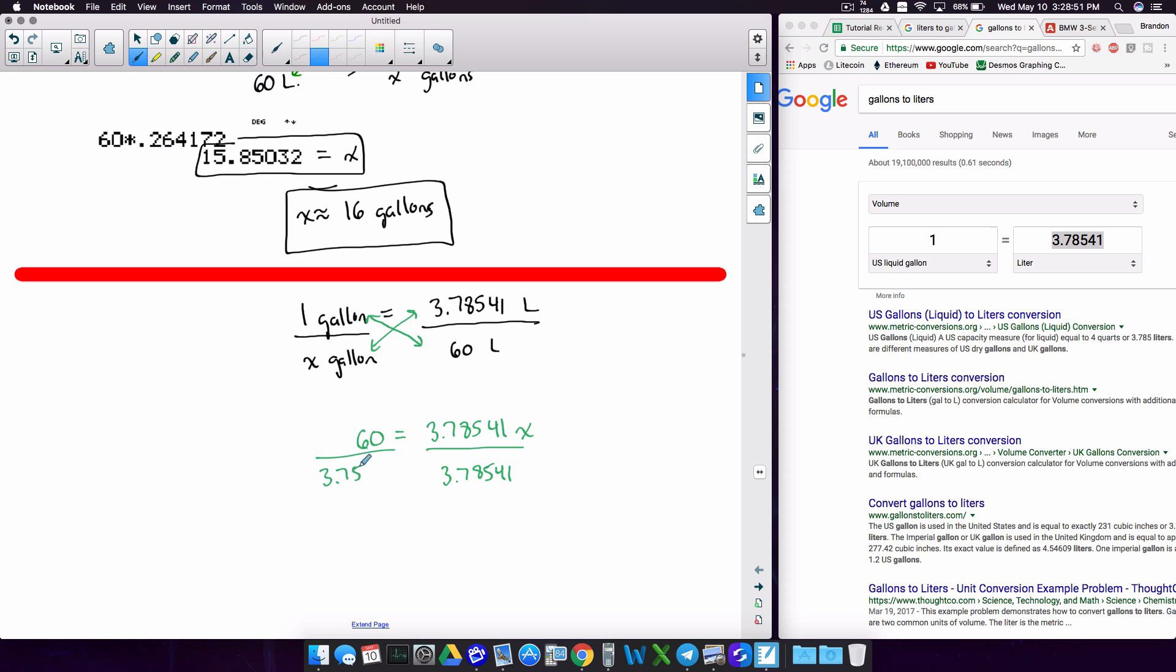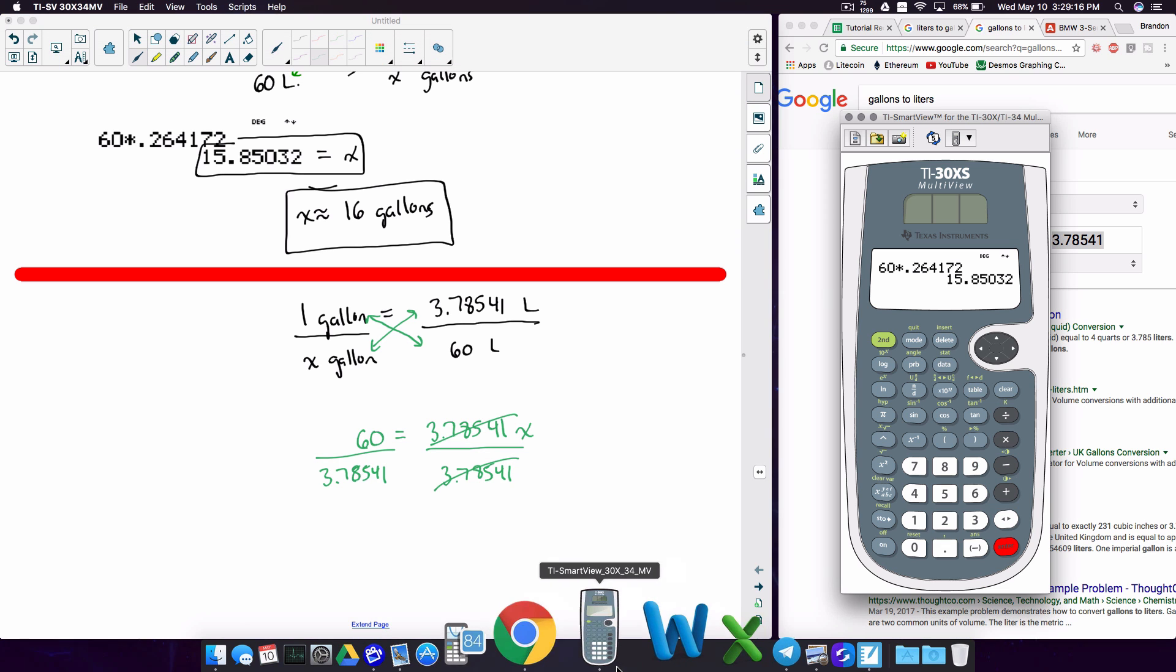And now to get x by itself, we want to divide by that 3.78541 on both sides. Now, the more you do these, the more you do proportions, the more you're going to realize all you do is cross multiply and divide. That's all we're really doing here. And the way I always think about it is I multiply the two numbers, this 1 and this 60. We multiply those together. And then we divide by the number that's getting multiplied by x. So going to our calculator, let's do 60 divided by 3.78541.